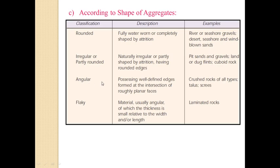Next is angular aggregate — possessing well-defined edges formed at the intersection of roughly planar faces. An example of this shape is crushed rock, that is talus screens, which are found in quarries. Next is flaky aggregate — material that is generally angular but with thickness small relative to its width and length. An example of flaky aggregate is laminated rocks.